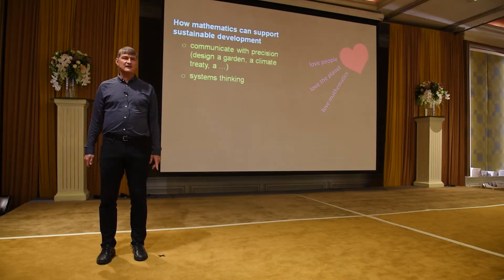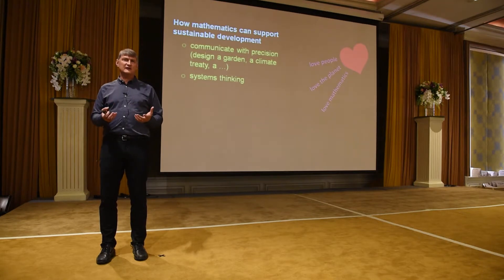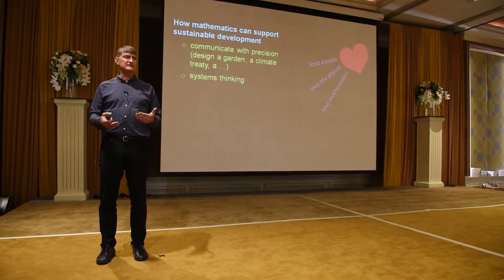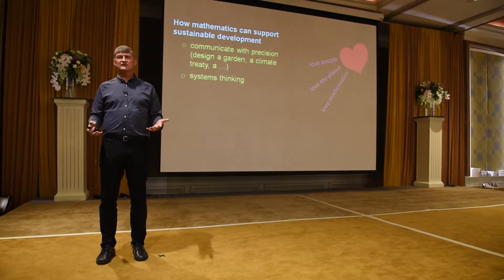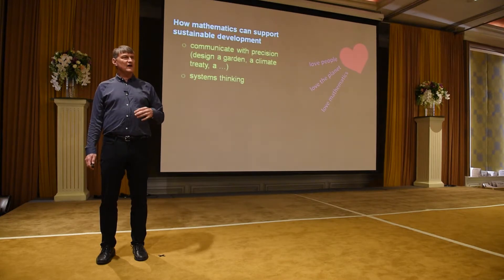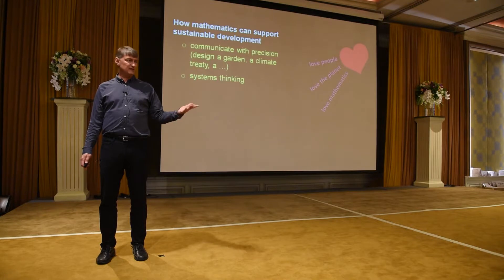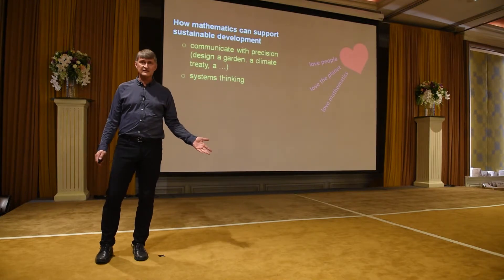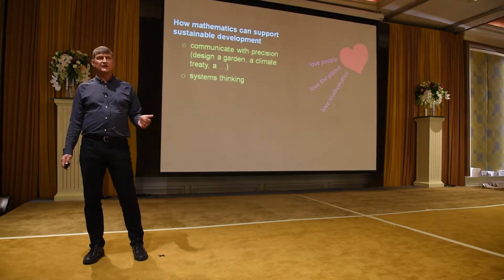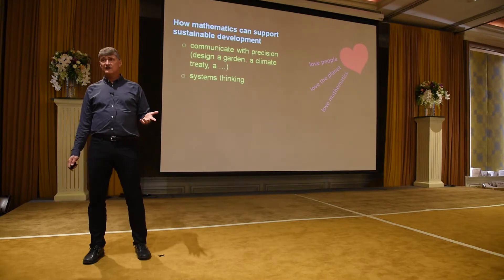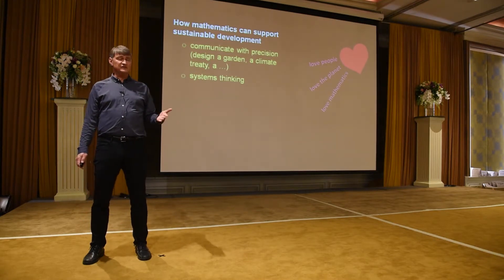First off, mathematics helps us communicate with precision. Precision is really important in the design of beautiful, efficient, and useful things, from the local to the global scale. On the local scale, when we design a garden, we use mathematics, which relates to sustainable food practices. On the global scale, when we design climate treaties, we have to figure out what to count and how to count it.